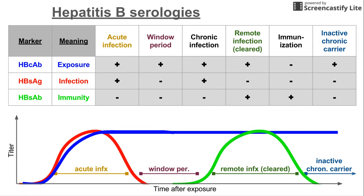If you were to get an immunization for hepatitis B, you would never have been exposed, so the core antibody would be negative. You would never have been infected — that's the point of the immunization — so the surface antigen is negative. But you would be immune, so the surface antibody would be positive.